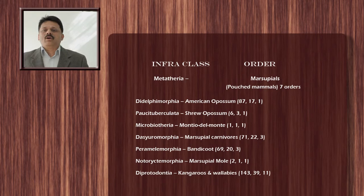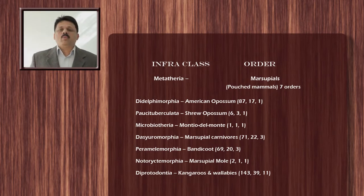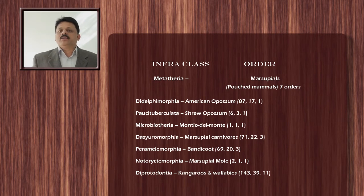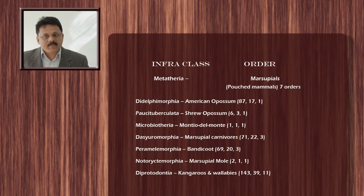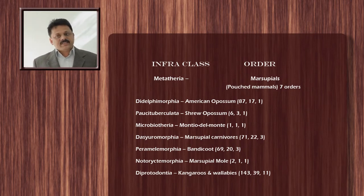The second order of marsupials is order Paucituberculata, which includes shrew opossums, with six species, three genera, and one family. The third order is Microbiotheria, which has only one species called the Monito del Monte. The fourth order is Dasyuromorphia, which includes marsupial carnivores — 71 species in 22 genera and three families. The fifth order is Peramelemorphia, which includes bandicoots, with 69 species in 20 genera and three families.